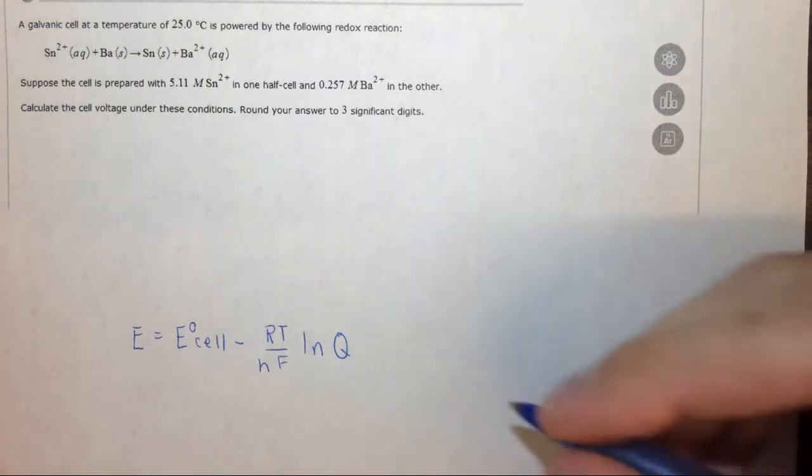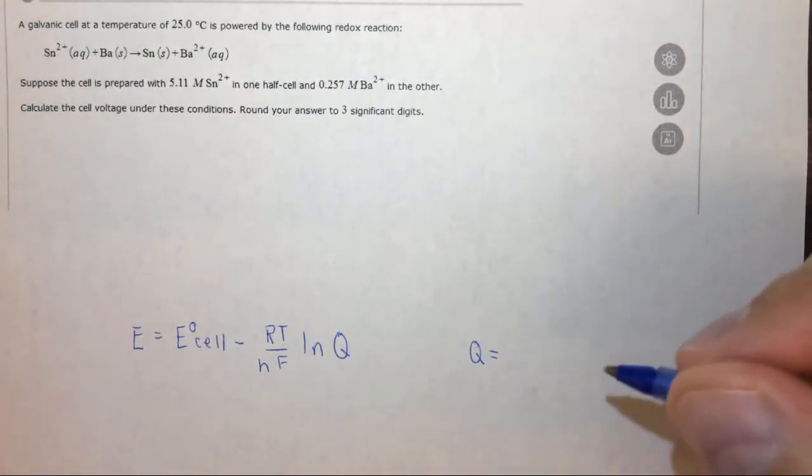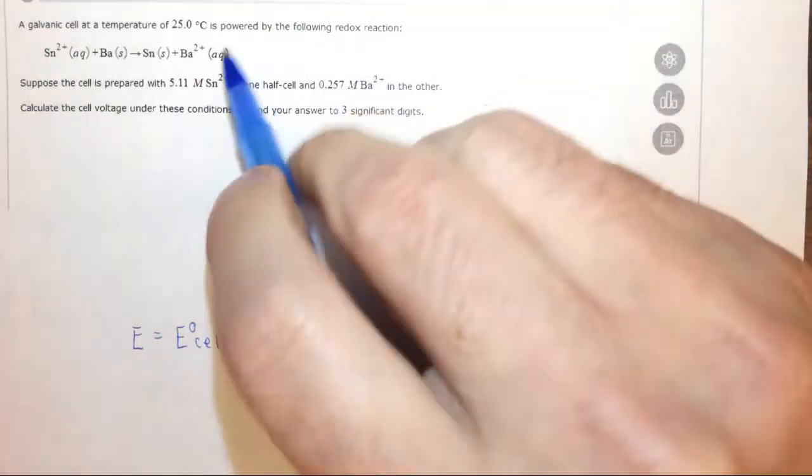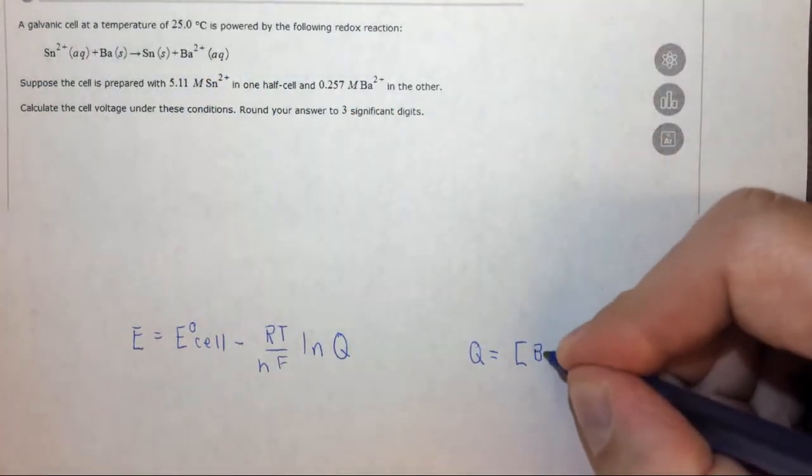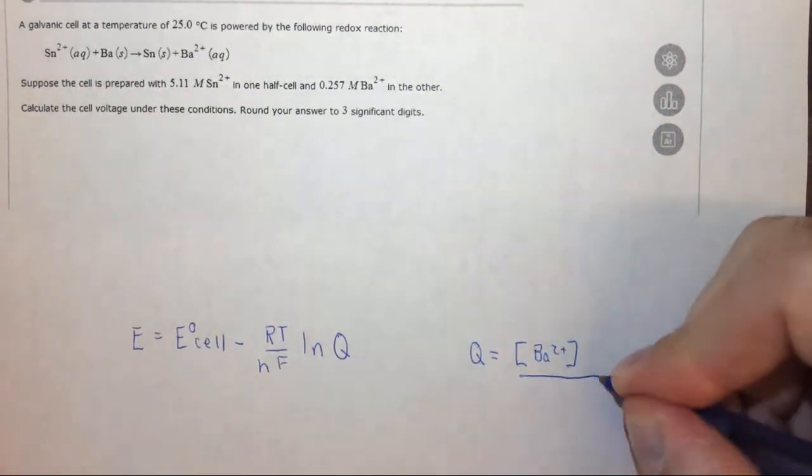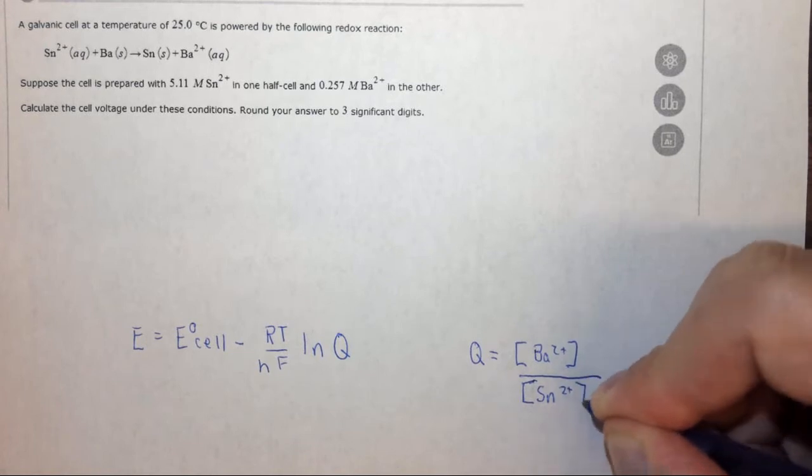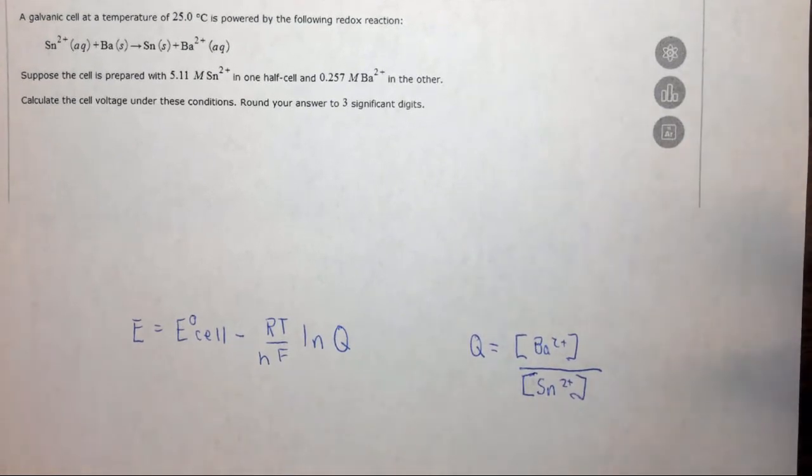Q is the current conditions. So Q equals products over reactants. In this case the only product that's aqueous is Ba 2 plus, and the only reactant that's aqueous is Sn 2 plus. So this is basically what we need to do.